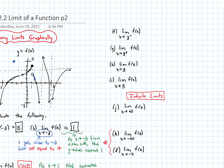Part F asks: what's the limit as x approaches 3 from the left? x equals 3 is where the vertical asymptote is. As I'm approaching 3 from the left, I am going along the function and the y values — the outputs — are getting super small. They're going to negative infinity. So I would write negative infinity.